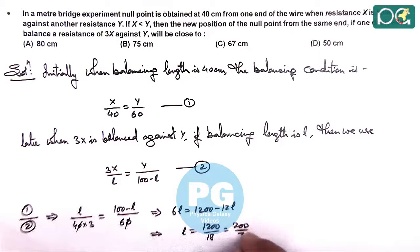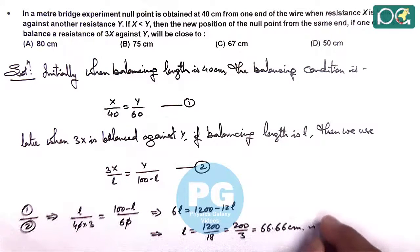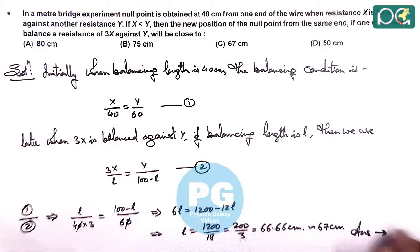which is 200 by 3, that's 66.66 centimeters, and you can see this is close to 67 centimeters. So here the answer to this question is option C.